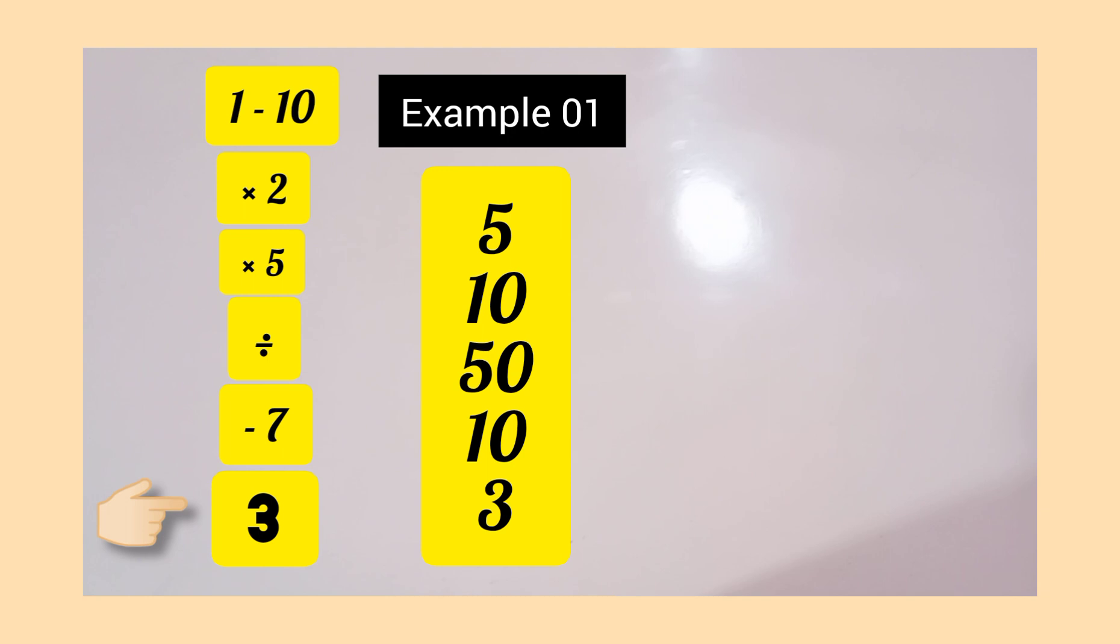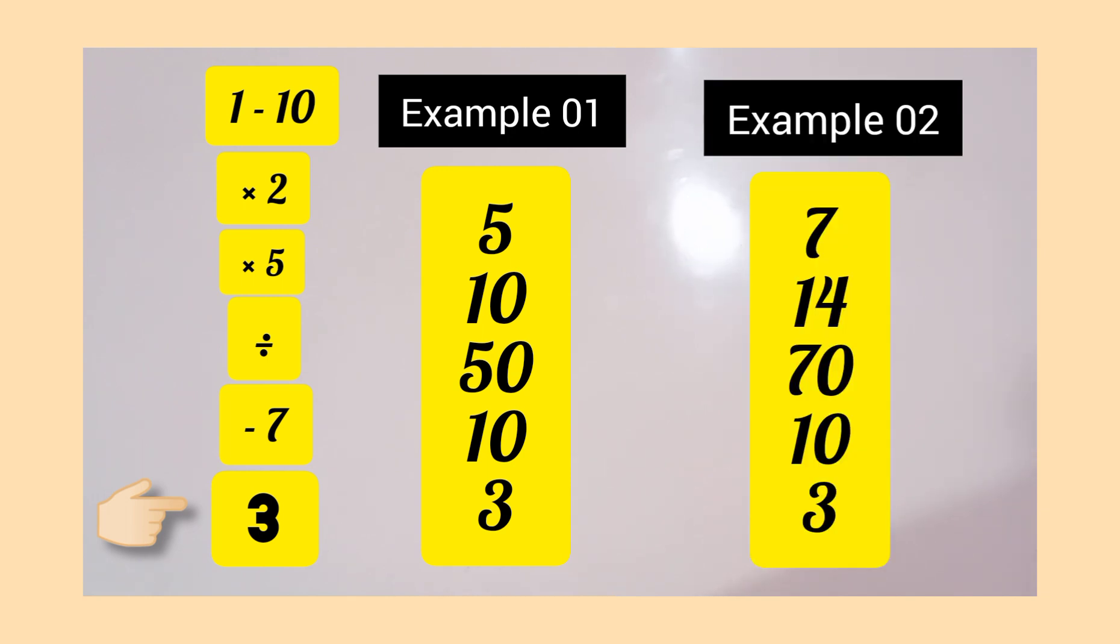Now here's another example. Let's say that they have chosen the number 7. Okay, if they take 7 and they multiply by 2, they're going to get 14. If they take 14 and multiply it by 5, they're going to get 70.